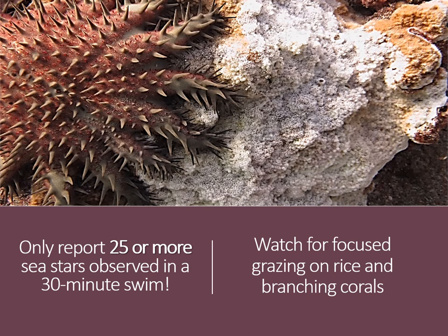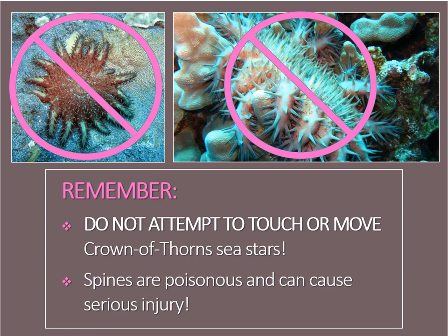Because Crown of Thorns Seastars are a native species on Hawaii's reefs, the Eyes of the Reef Network requests that you only report 25 or more animals observed during an approximately 30-minute swim using our online reporting system. Observing one or two Crown of Thorns Seastars during a visit to your reef is completely normal. Predation often occurs on rice and branching corals and can be identified as a white lesion matching the shape of the sea star. Coral tissue is usually evenly removed down to the bare coral skeleton, sometimes with remnants of live coral tissue in hard to reach areas. Please do not attempt to touch or move a Crown of Thorns Seastar — their spines are highly poisonous and can cause a serious and painful injury if contacted.